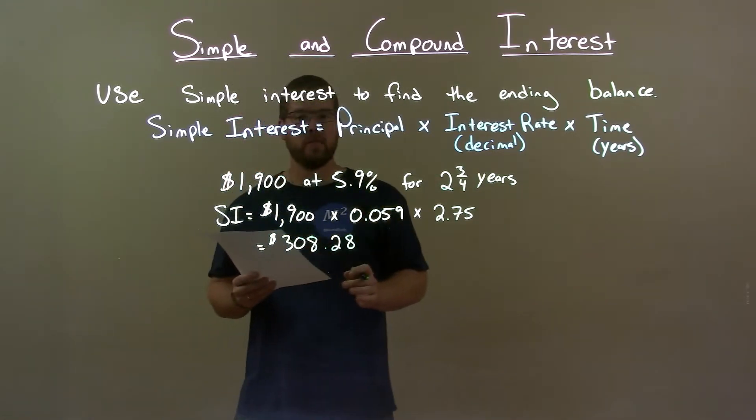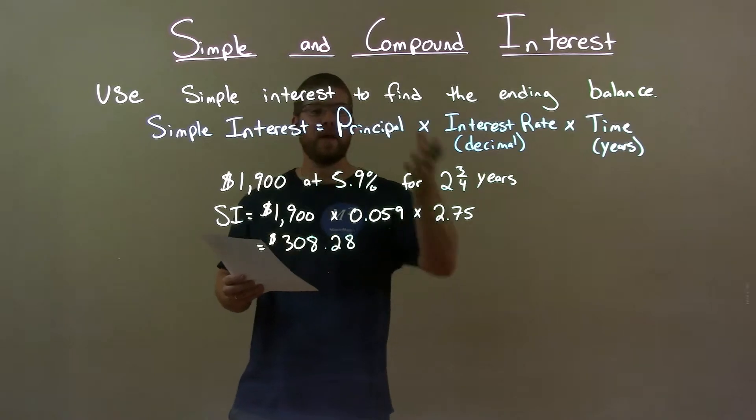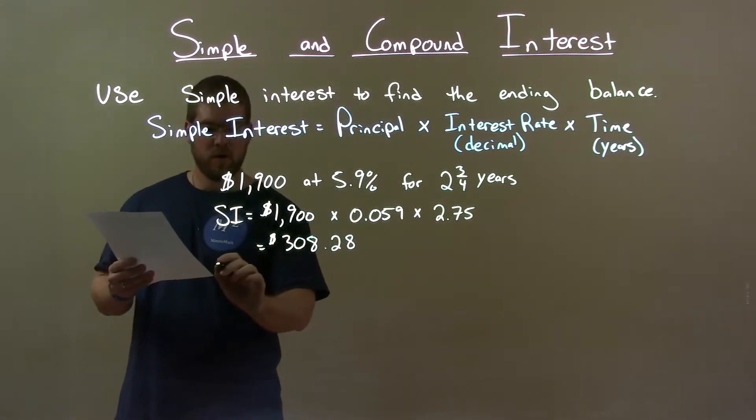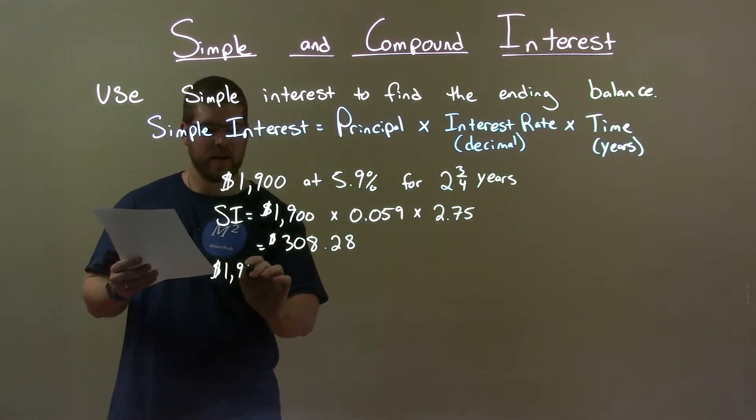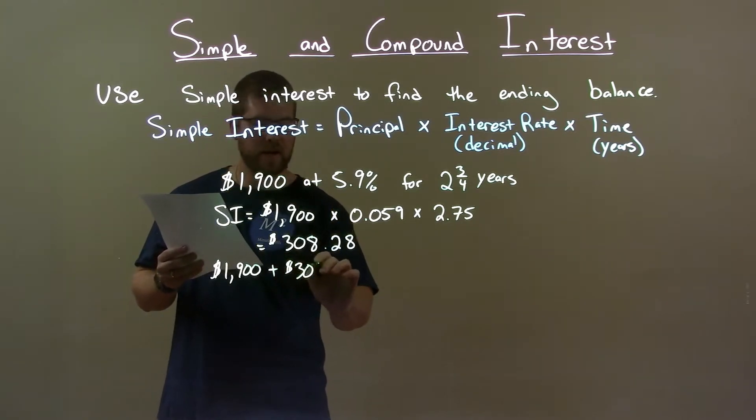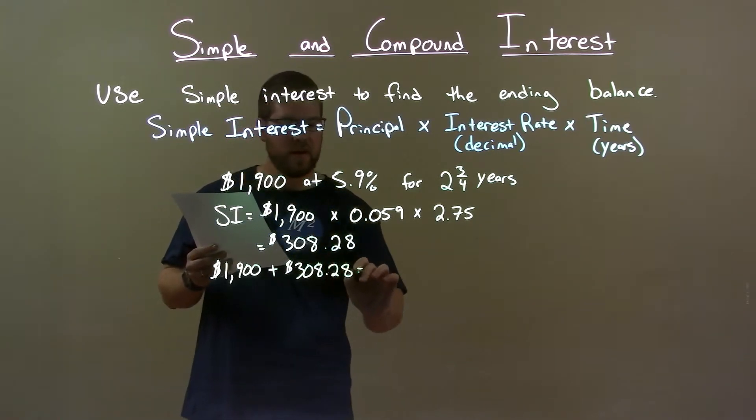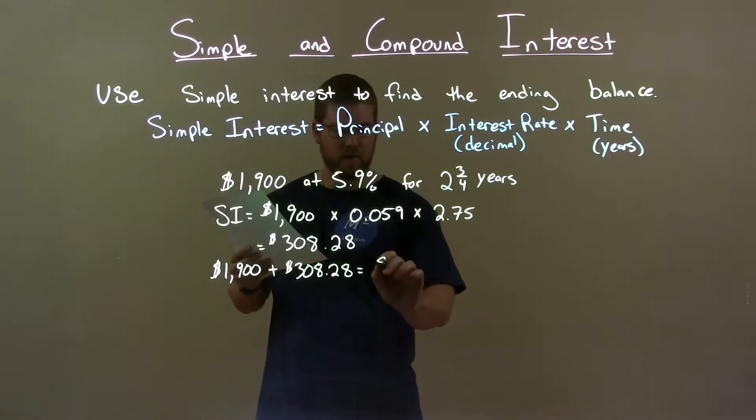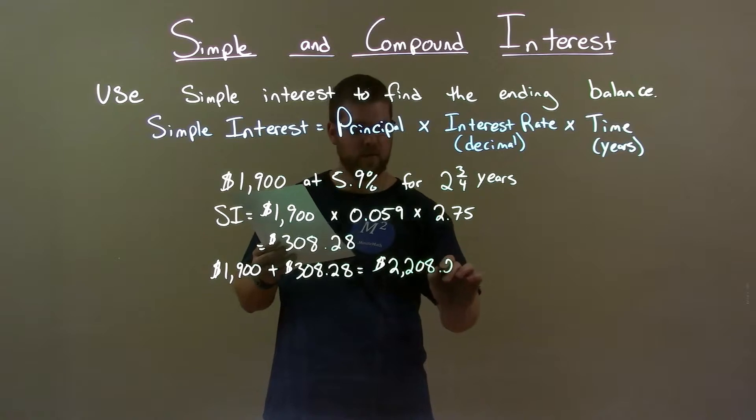Now, that's just the simple interest. To find the ending balance, we have to add back the principal. The principal, 1,900, plus our simple interest, $308.28, gives us our ending balance of $2,208.28.